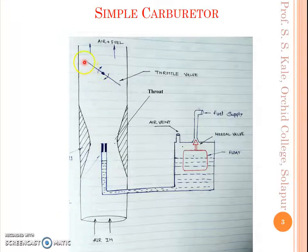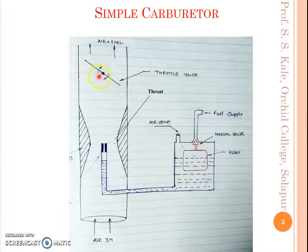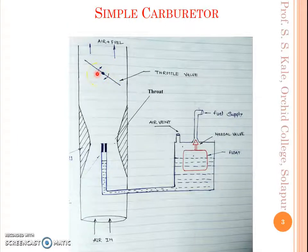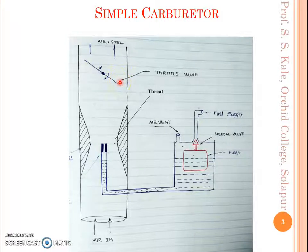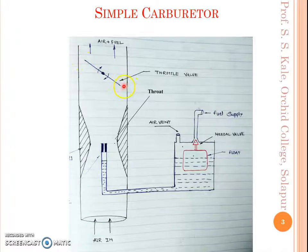Next, this is a throttle valve. This throttle valve is directly connected to the accelerator of the vehicle. When we apply the accelerator, the throttle valve will get open in the direction of the arrow, and when the accelerator is released it gets closed. An arrangement is made so that when we release the accelerator the throttle valve doesn't get closed completely — some small opening is provided.